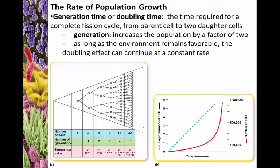Because cell division happens with one cell dividing into two, the generation time or doubling time we measure is the amount of time it takes for a complete fission cycle to occur — in other words, the time it takes to go from one cell to two daughter cells. Each generation has the population increasing by a factor of two: one to two, two to four, four to eight, eight to sixteen, sixteen to thirty-two, thirty-two to sixty-four, and so on. As long as the environment is favorable, the doubling time can continue at a consistent rate.